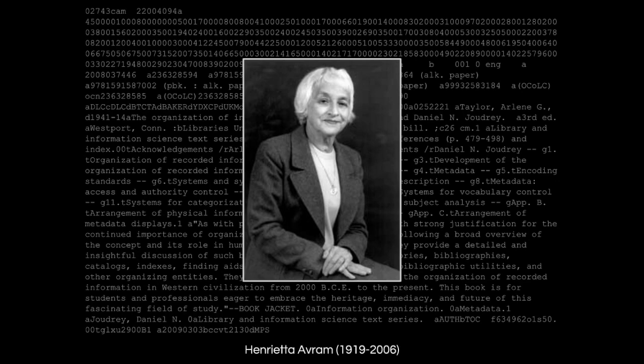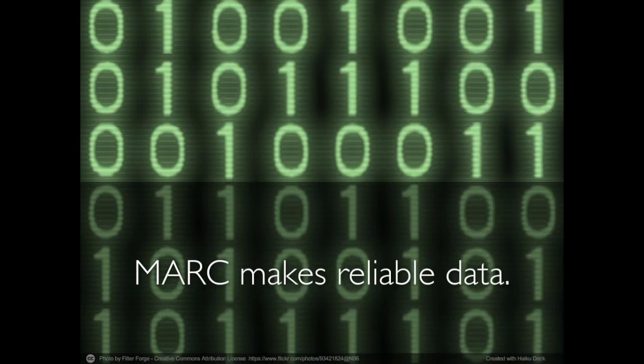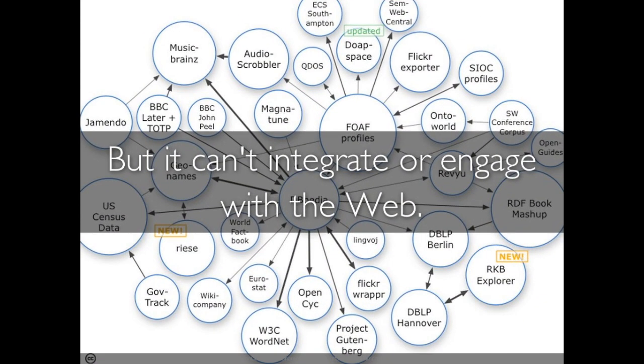Throughout the last half of the 20th century and into the 21st century, libraries rushed into automation based on the stable foundation of MARC catalog records. Libraries worldwide rely on MARC-based systems for the communication, storage, and expression of their bibliographic data. But there's a problem with MARC metadata. MARC can make great catalog cards — it is so structured, it makes terrific, reliable, and stable data. But it cannot integrate or engage with the world wide web.